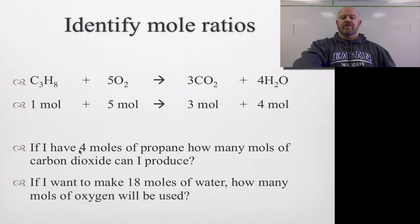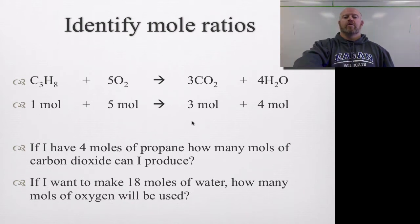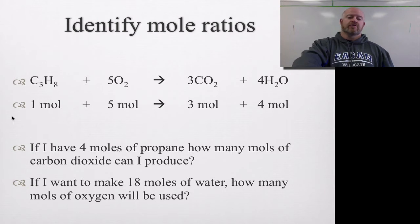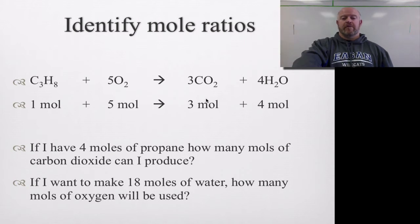If you have four moles of propane, how many moles of carbon dioxide can you produce? Our ratio is one to three, so if propane became four moles, we know that carbon dioxide has to be three times as much. For every one mole of propane, we get three moles of CO₂, so four moles of propane gives us 12 moles of carbon dioxide.